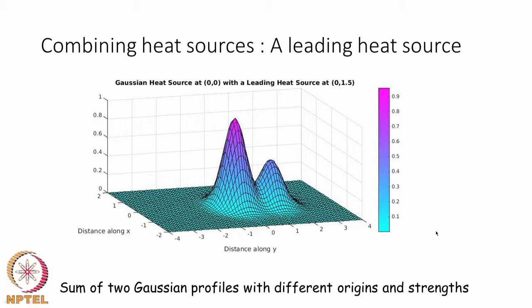Here I have shown two heat sources being joined: the one with taller appearance is the welding heat source and the one ahead of it is the preheating heat source. You may have two torches doing this job and you could combine two Gaussian functions to achieve this. Essentially, we have taken two Gaussian functions with different intensity values and shifted the origin of one of them, then added the values and plotted the result.